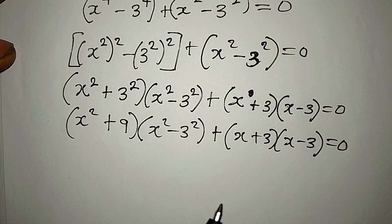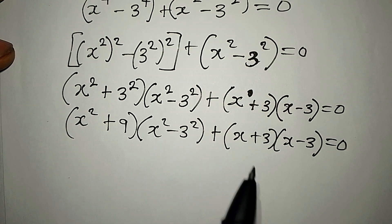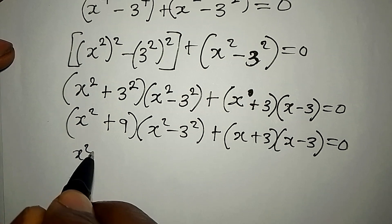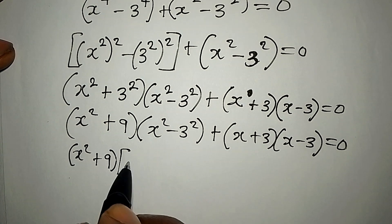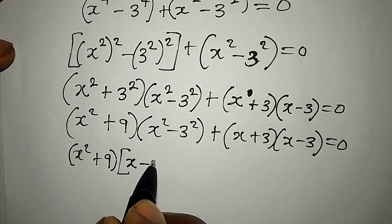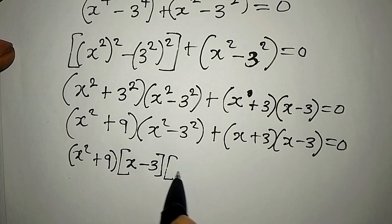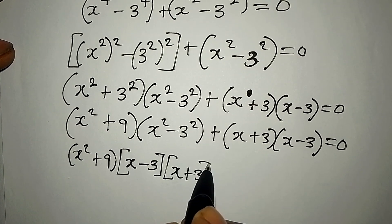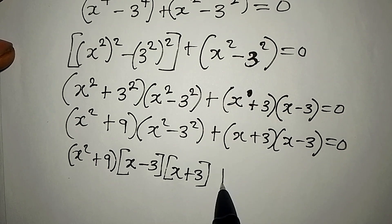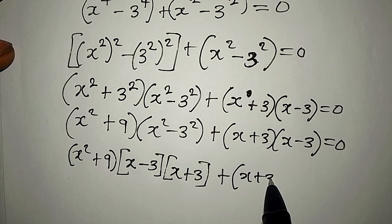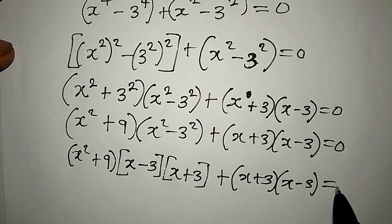Now I'm going to apply difference of two squares here again so that x squared plus 9 is factored out, and then we have x minus 3 into x plus 3. This is the difference of two squares for what we have here, then plus we have x plus 3 into x minus 3, and this is equal to zero.